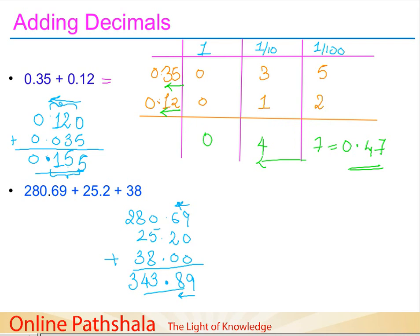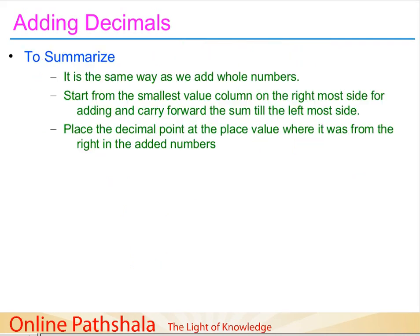To summarize: adding decimals is the same as adding whole numbers — start from the smallest value column on the rightmost side, carry forward the sum to the leftmost side, then place the decimal point at the position matching the maximum number of decimal places in the numbers being added.